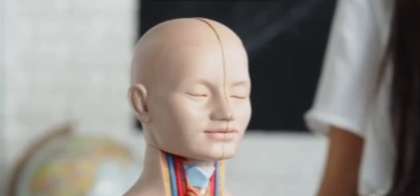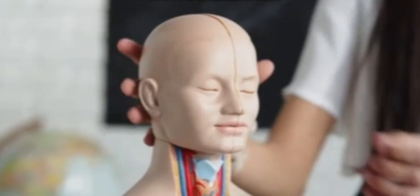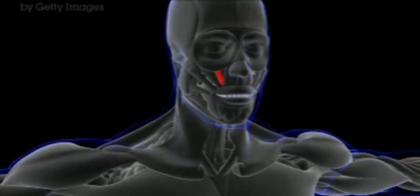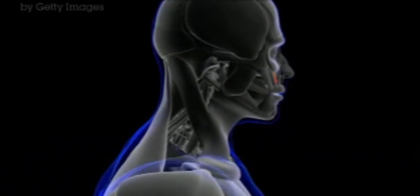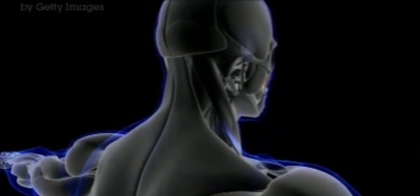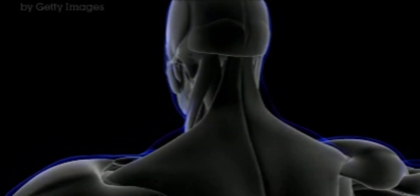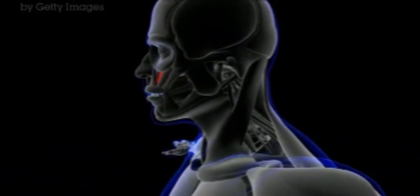Superior means above. The head is superior to the neck, indicating that the head is positioned above the neck in the body's vertical axis. Inferior means below. The neck is inferior to the head, meaning the neck is located below the head in the body's vertical axis.